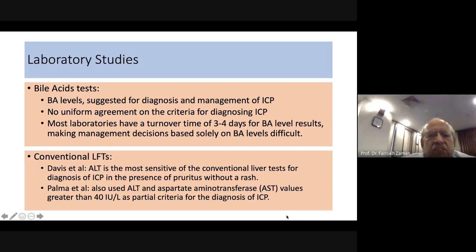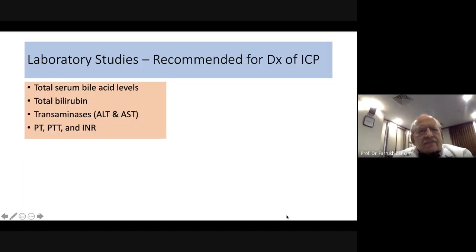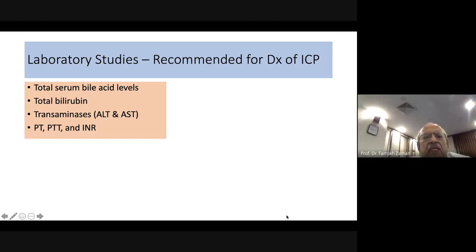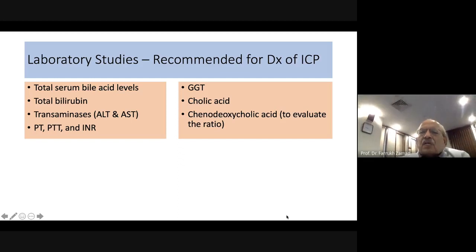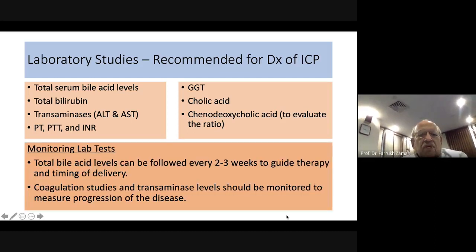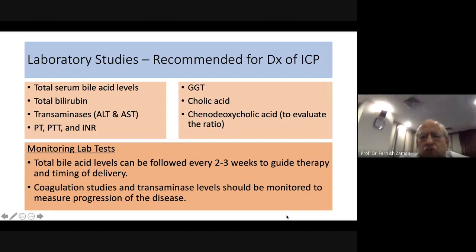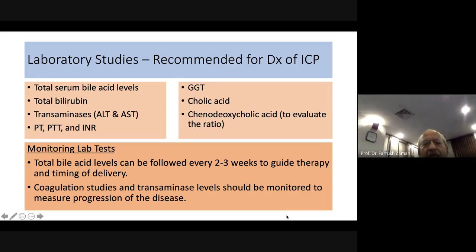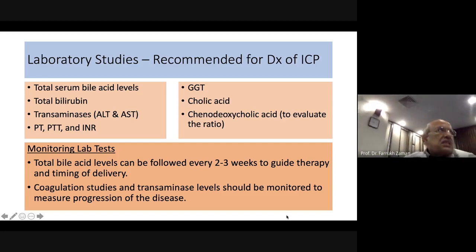Investigations include total serum bile acid levels, bilirubin, transaminases, PT, PTT, INR, GGT, cholic acid, and chenodeoxycholic acid to evaluate the ratio. Total bile acid levels can be followed every two to three weeks to guide therapy and timing of delivery. Coagulation studies and transaminase levels should be monitored to measure disease progress; stability indicates that continuation is appropriate.